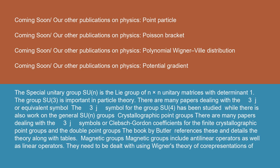SU(N): the special unitary group SU(N) is the Lie group of N×N unitary matrices with determinant 1. The group SU(3) is important in particle theory. There are many papers dealing with the 3J or equivalent symbol. The 3J symbol for the group SU(4) has been studied while there is also work on the general SU(N) groups.